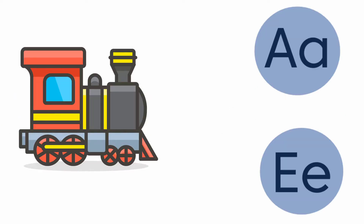Here they have given 'engine' and the letters they have given are A and E. The beginning sound of the picture 'engine' is 'eh'. The sound of the letter A is 'a', and the beginning sound of the picture 'engine' is 'eh' — both are different sounds, so it does not match. Look at the next letter, it is E. The sound of the letter E is 'eh', and the beginning sound of the picture 'engine' is 'eh' — both are same sounds. So we are going to match the picture to the letter E.